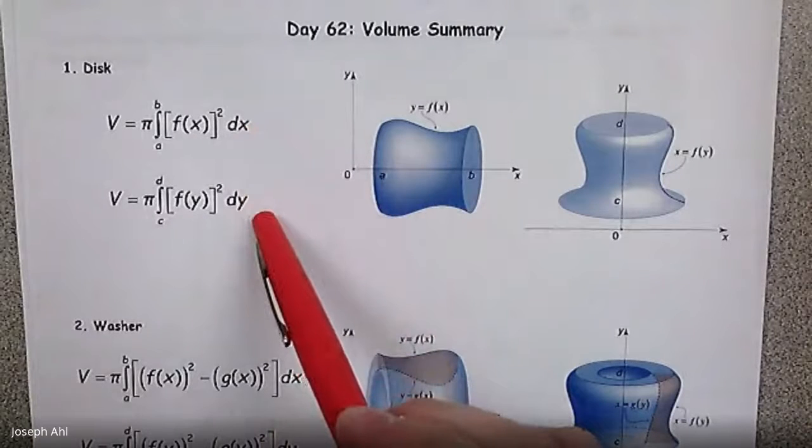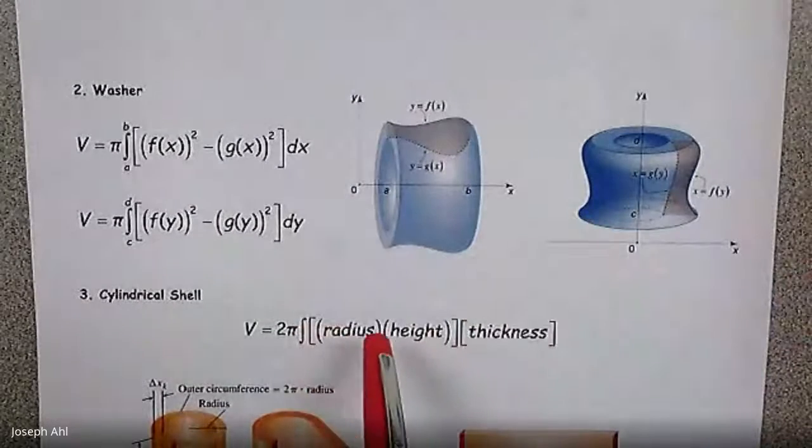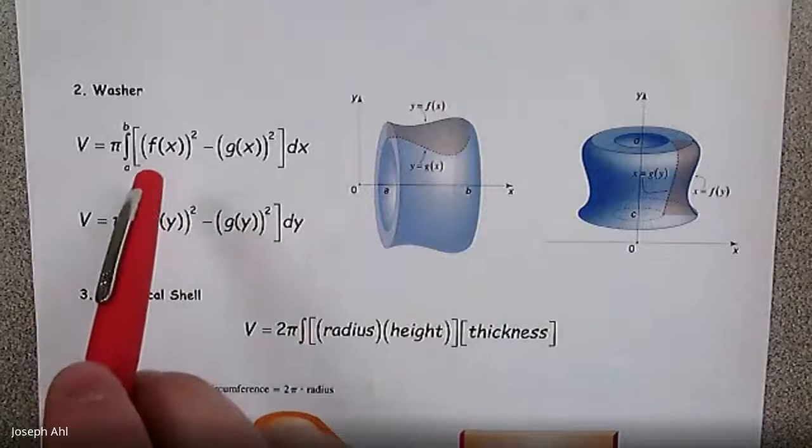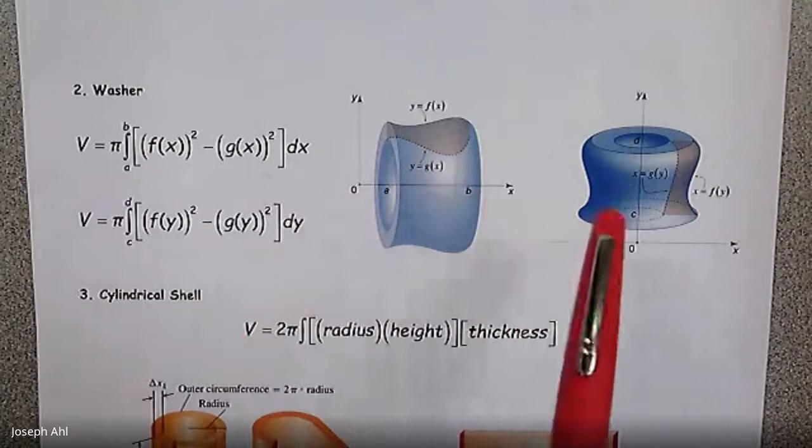So we have our dx and dy equations for volume for disk. Same thing when we get into washers, we're taking the big radius squared minus the smaller radius squared and integrating along the appropriate axes with respect to x or with respect to y.